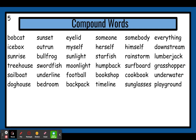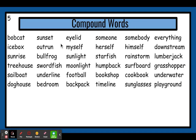Next word, we have bull and frog. Put them together: bullfrog. And this is a very big frog — I guess people thought at one point that it looked a lot like a bull. Next one: sun and light. You know what the sun is, and you know what light is. You put them together and you can know what the meaning of this big word is: sunlight. It's the light that comes from the sun.